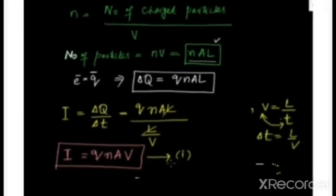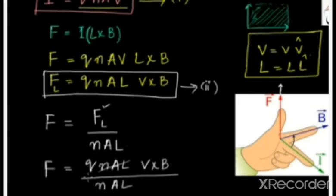Now put this value into the expression from the first article of chapter 14: force is equal to F = IL×B. Substituting the value of I, and noting that the direction of l is the same as the direction of v — meaning l is in the positive x-direction and the charge carrier velocity v is also moving in the positive x-direction.